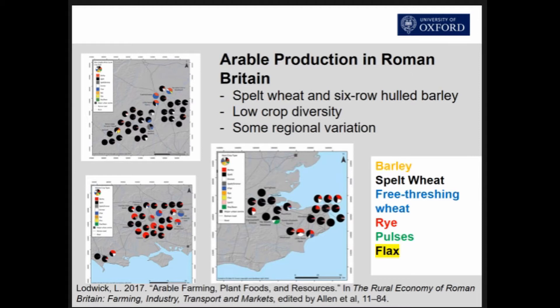Zooming into a few particular periods, we do have some indications of regional emphasis on different crops. In the south east, in Kent, we have a mix of barley and spelt wheat with some more pulse in some areas. Through to Hampshire in the bottom left-hand corner — an area of chalkland — we have more emphasis on barley. And then through to the east midlands in the top left-hand corner, we have much more emphasis on spelt wheat.